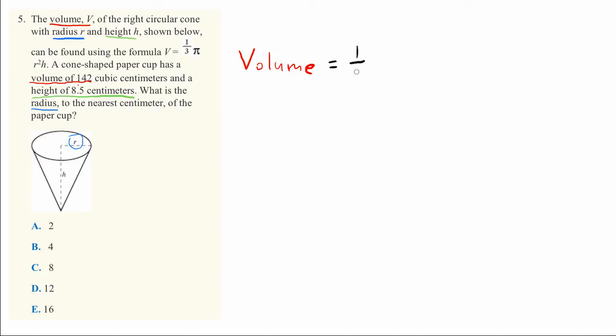Volume equals one-third times pi times radius squared times height. This is just a different way of writing out that same formula they gave us.